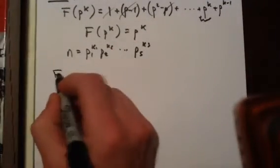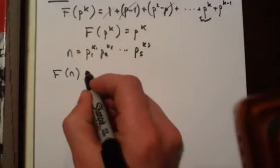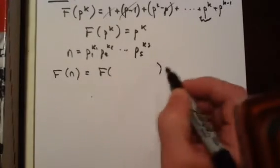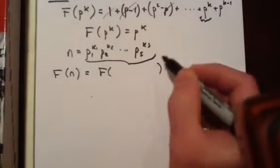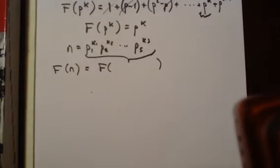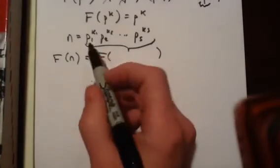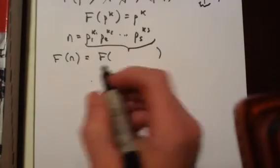And so let's apply our function to n. It's going to be f applied to all that stuff, but we know that this is a multiplicative function and all of these terms are relatively prime.